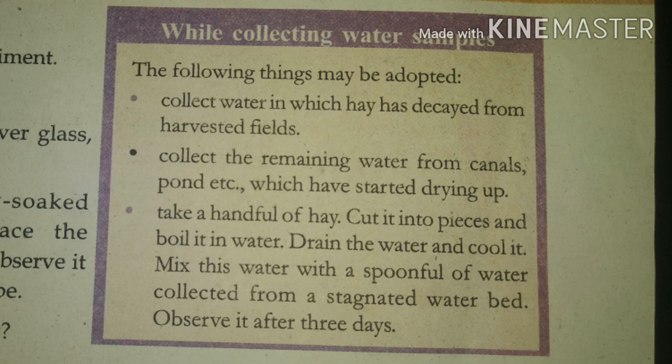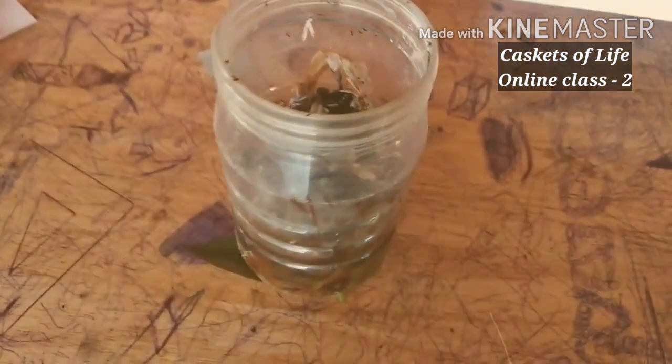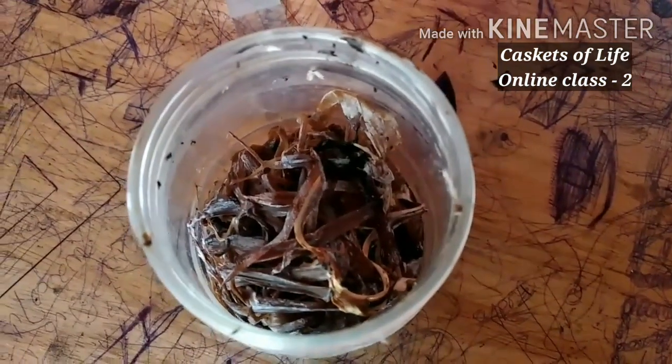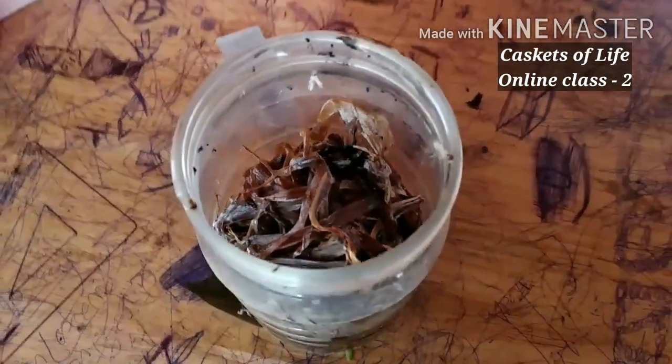To prepare hair-soaked water: take some hair, cut it into pieces, and boil it with some water. After that, strain the water and allow it to cool. Take a drop of that water and mix it with water from a pond. Now we are seeing such water which was prepared earlier — this is the hair-soaked water.